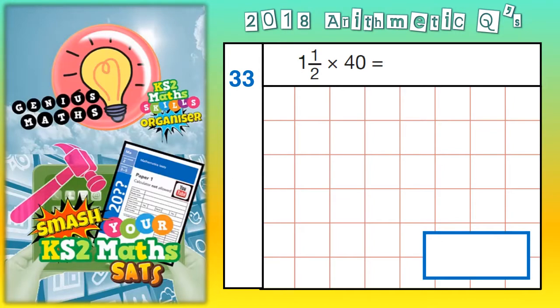Welcome, Arrhythm Tick Ninjas, to question number 33. And this one's all about multiplying a simple mixed number by a whole number. So we've got 1½ multiplied by 40.